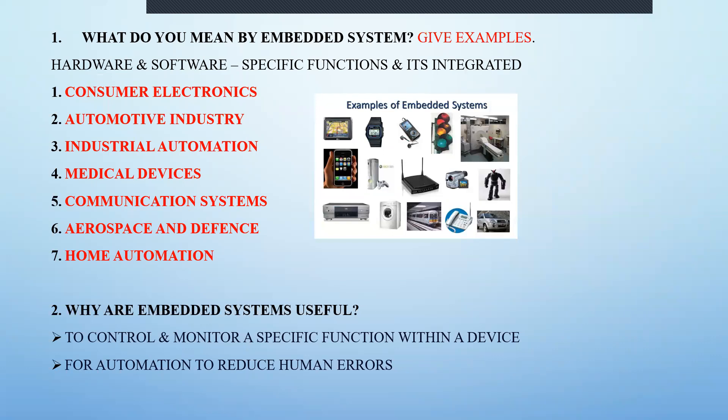What are all the examples? All the real-time things that we are using today are examples of embedded systems, like a wristwatch, mobile phones, robots. It can be used in medical devices like ECG, pulse detection, industrial automation, consumer electronics, home automation like washing machines, switching on and off of motors, and traffic lights — all these come under the embedded system.